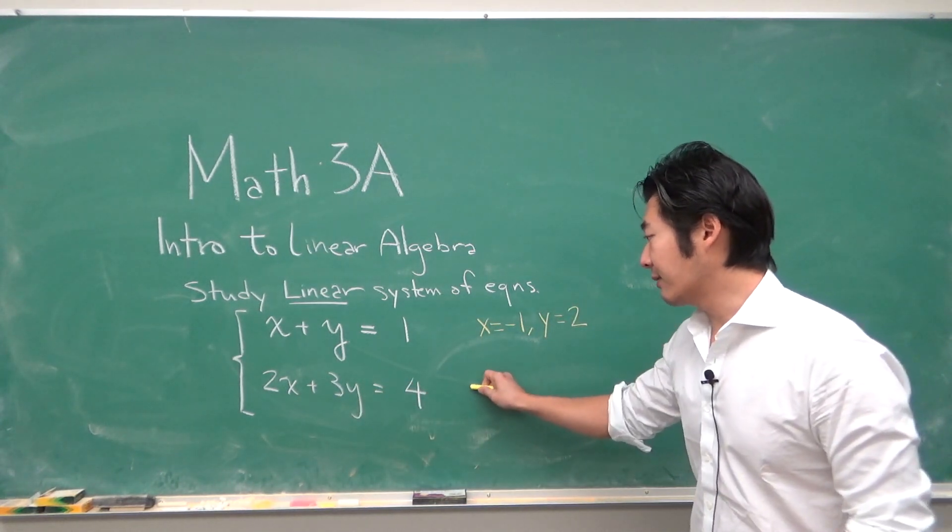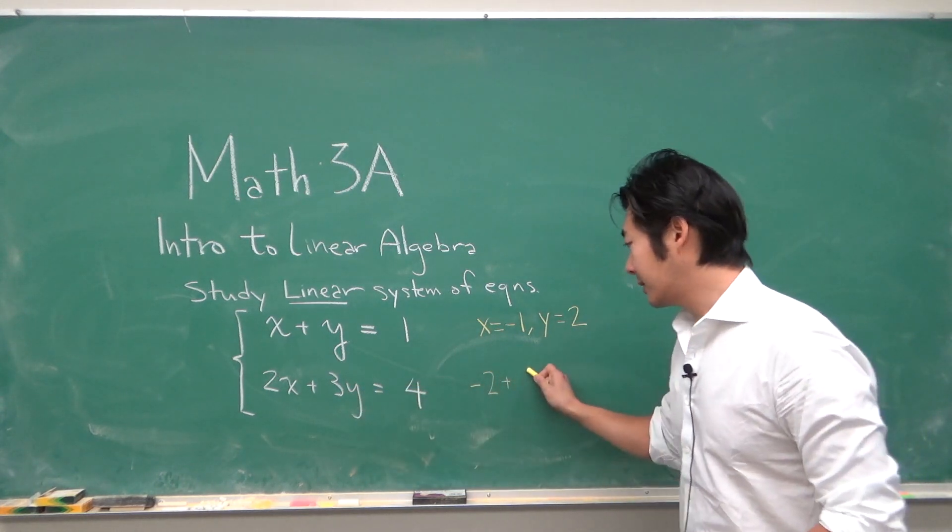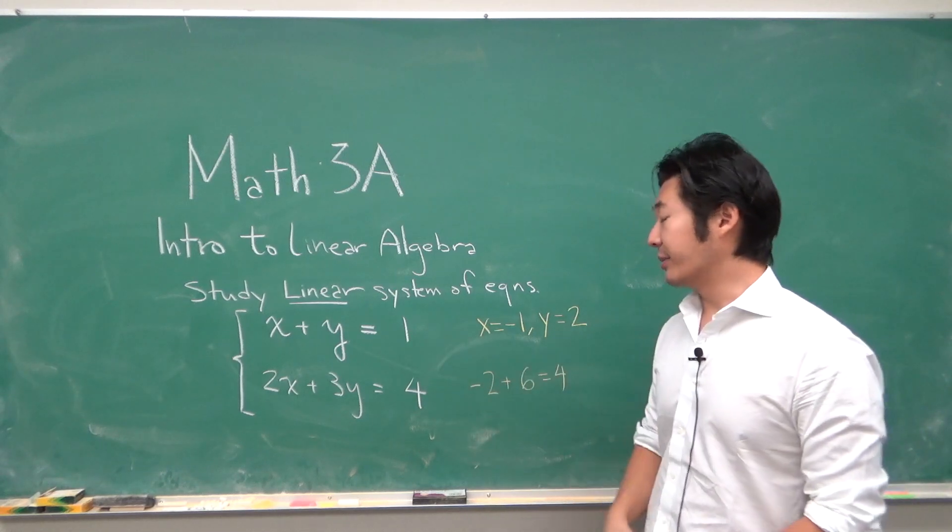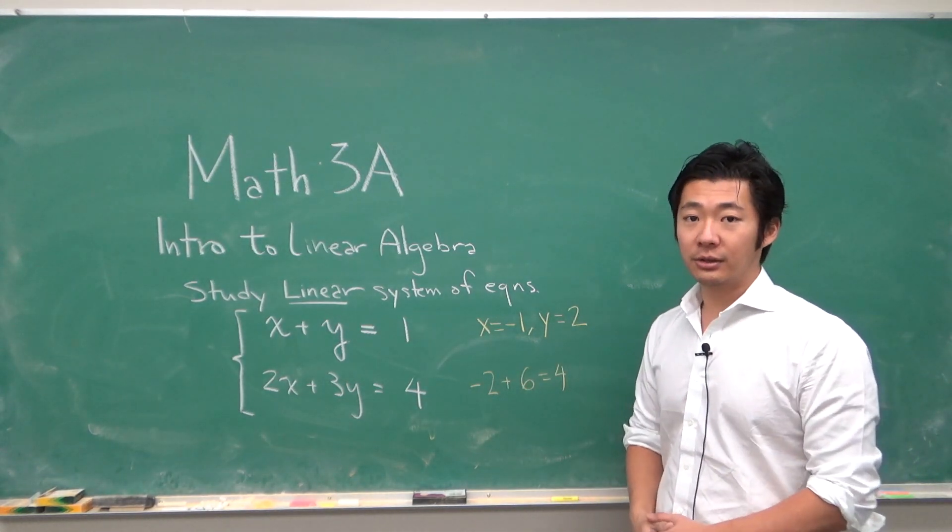So that's equal to 4, so these are both satisfied. How do we find such a solution? I'm sure you have seen these before - you can solve for a variable and plug it in.